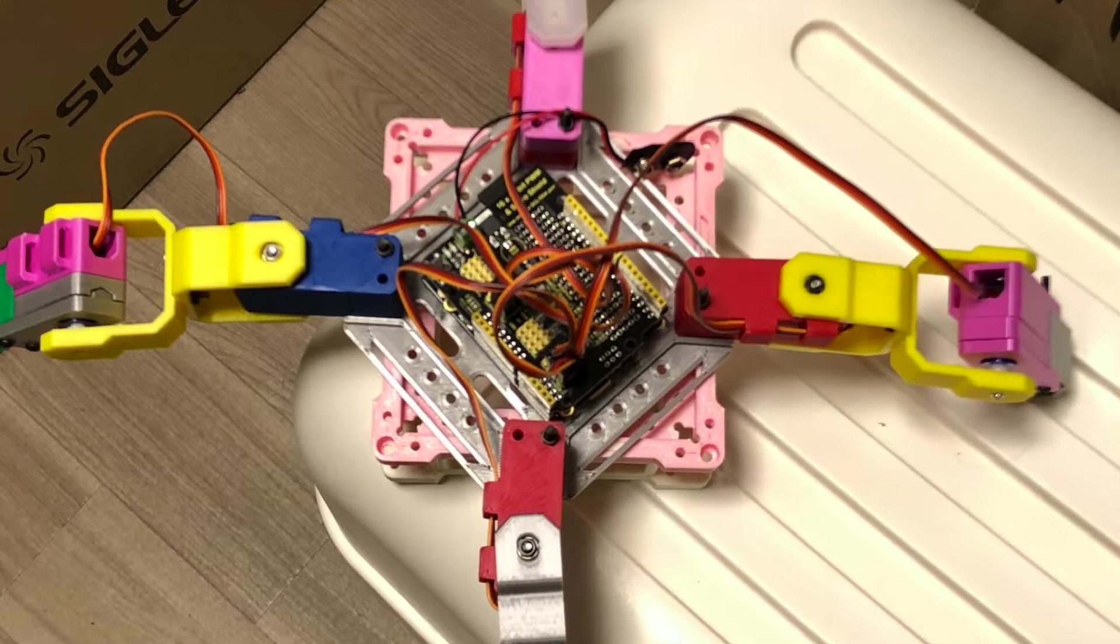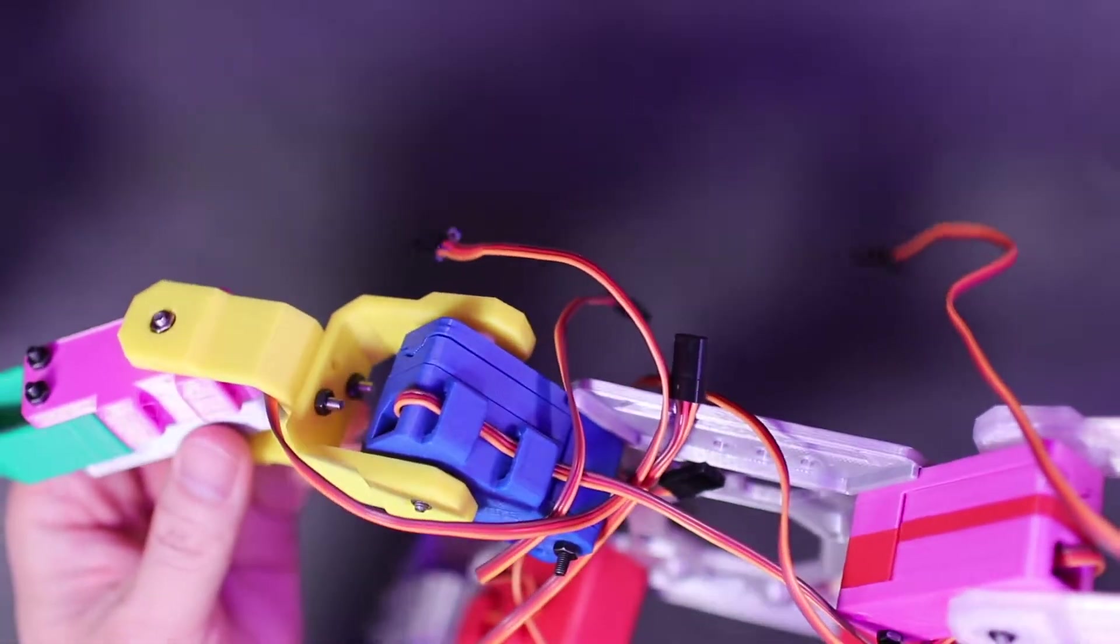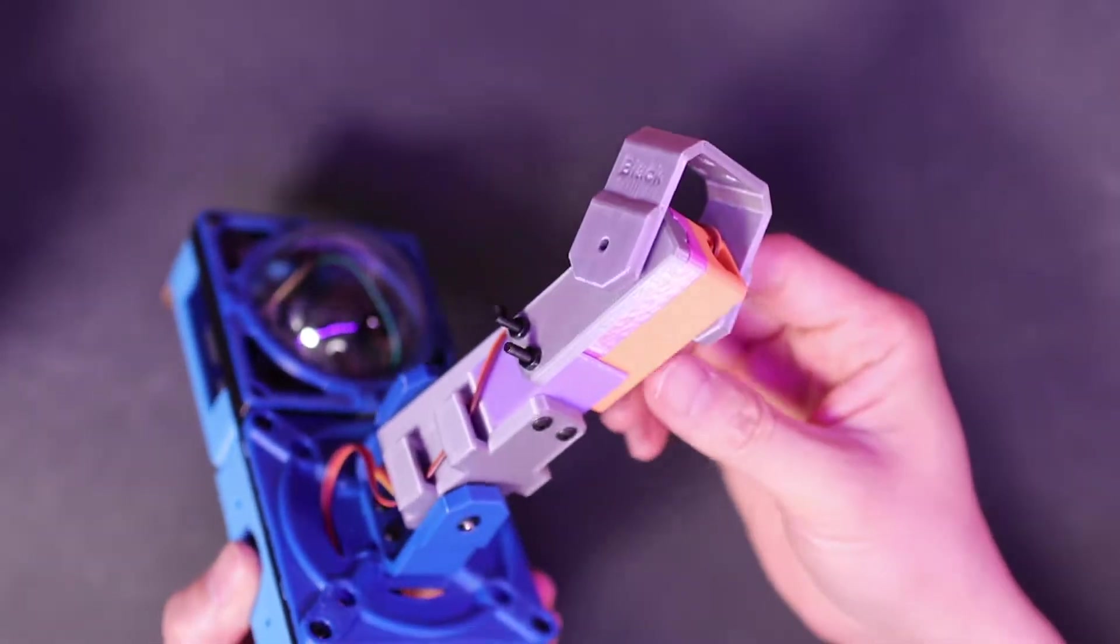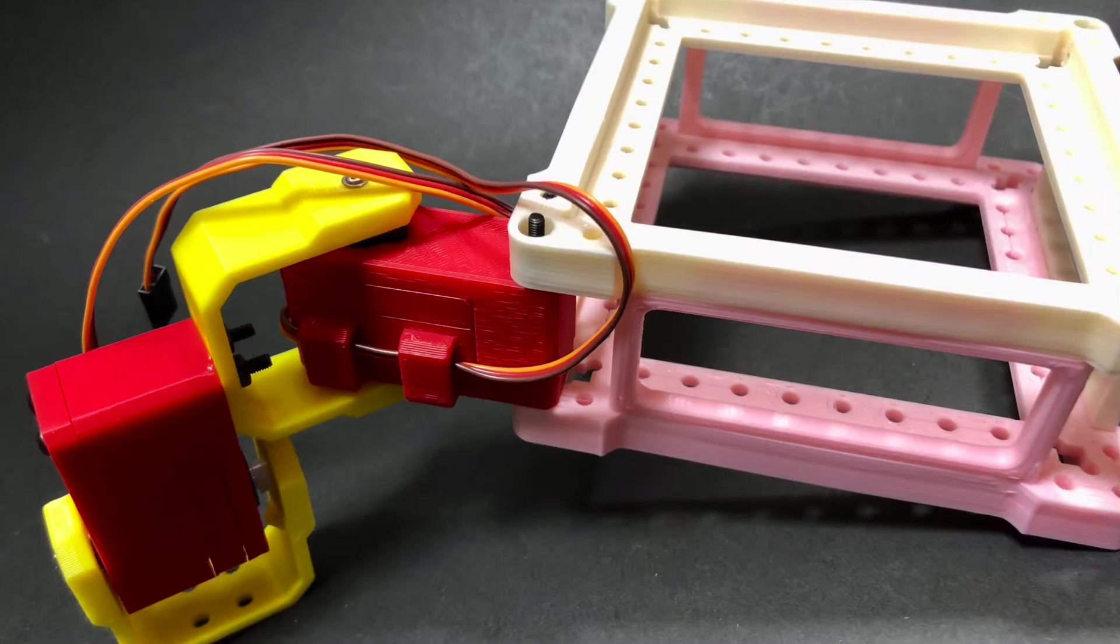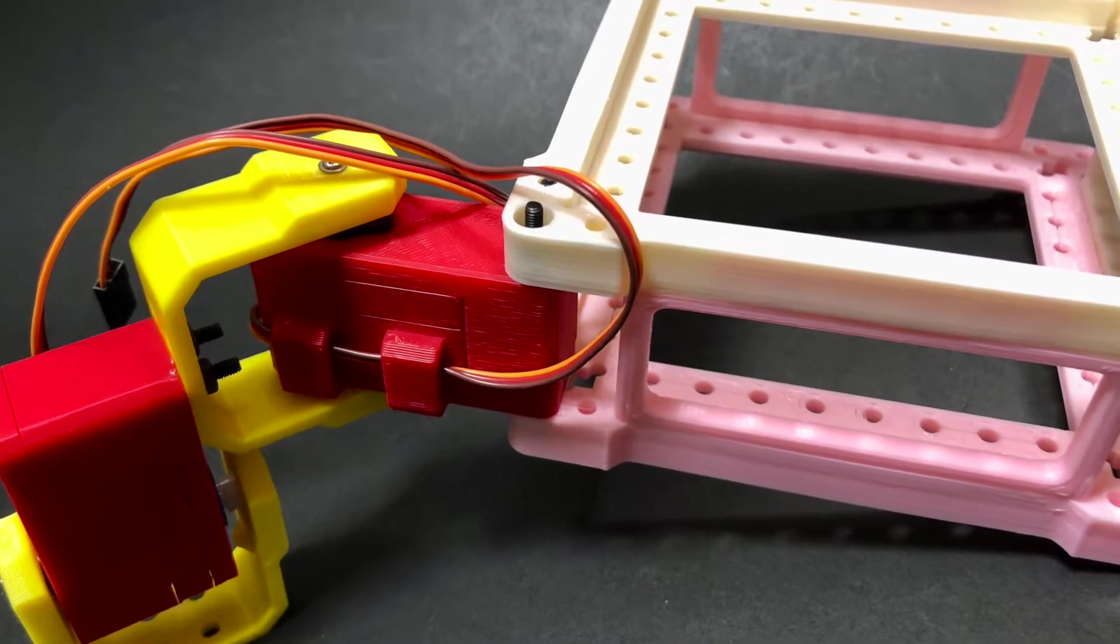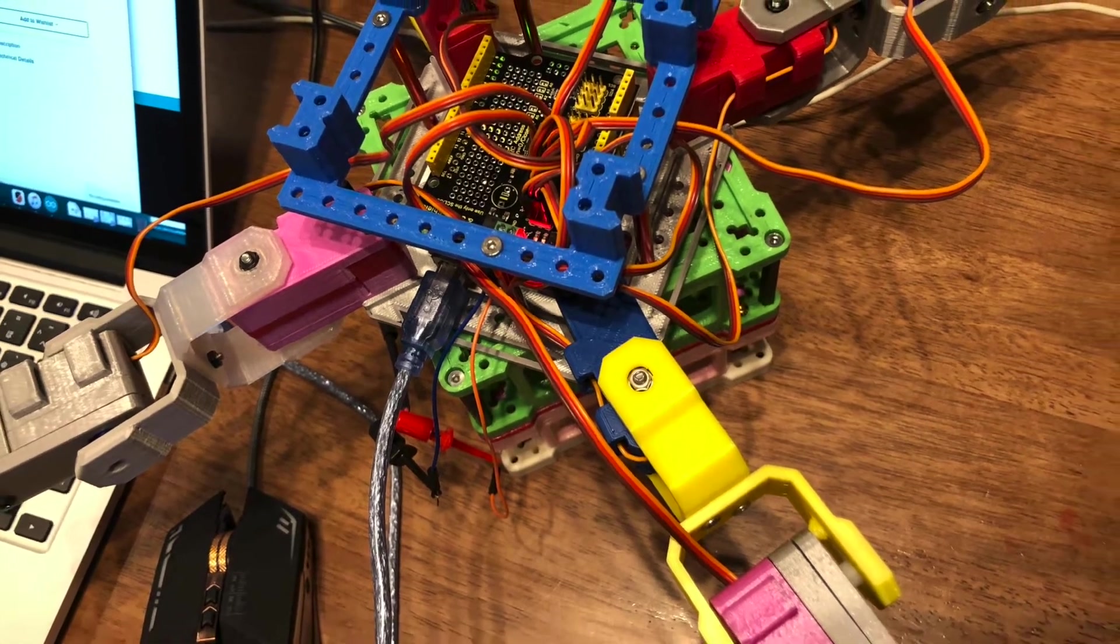For the legs of the spider, I decided to reuse some robot arms I made before. You can find these robot arms in my previous videos. In the beginning, I modified the 3D model of the robot arms and turned it into a spider leg.